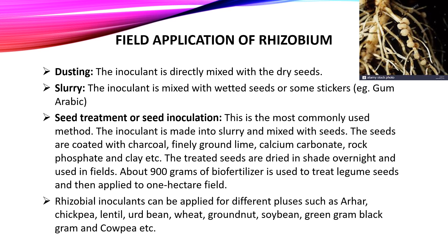There are three methods of applying Rhizobium in the field. First, dusting: the inoculant is directly mixed with dry seed. Second, slurry: the inoculant is mixed with wetted seed using a sticker like gum arabic. Third, seed treatment or seed inoculation — the most commonly used method — where the inoculant is made into slurry and mixed with seeds, which are then coated with finely ground lime, calcium carbonate, rock phosphate, or clay. The treated seeds are dried in shade overnight. About 900 grams of biofertilizer is used to treat legume seeds for one hectare.